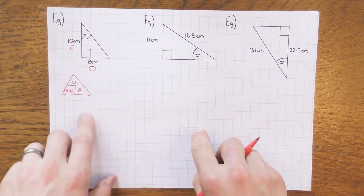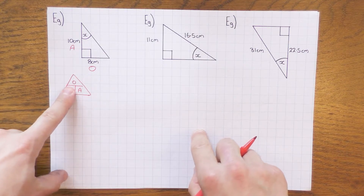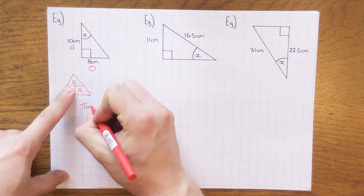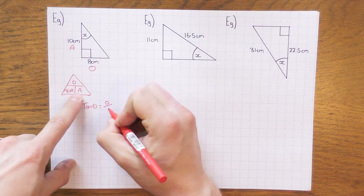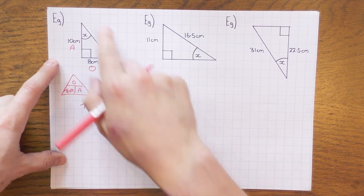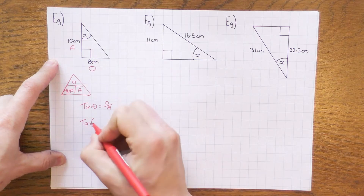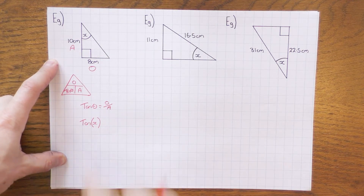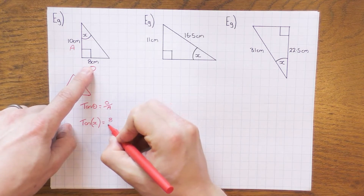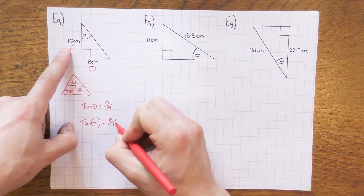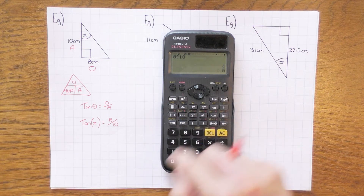I'm after the angle theta, so I'm going to cover that up, and that tells me that tan theta equals the opposite divided by the adjacent. I'll fill in what I know: tan x equals the opposite, which is 8, divided by the adjacent, which is 10.